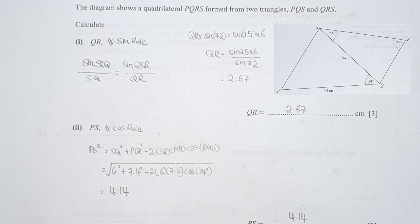For part 2, finding PS, we use the cosine rule. So PS equals the square root of 6² + 7.4² − 2 × 6 × 7.4 × cos(34°). From this you get the final result as 4.14.